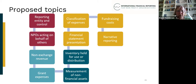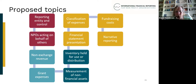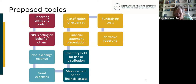There are 10 topics we're proposing to include in the first set of guidance. We're proposing to include non-exchange revenue — covering grants received, cash donations, gifts in kind, and services in kind. This would address when these types of revenue should be recognised, how to determine the value for gifts and services in kind, and what would need to be covered in disclosures.